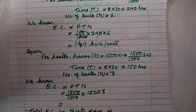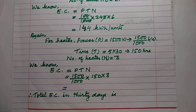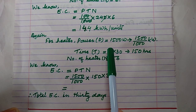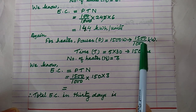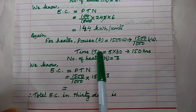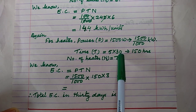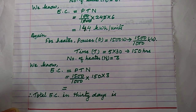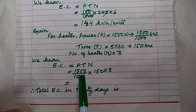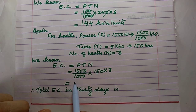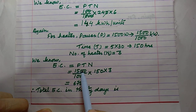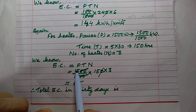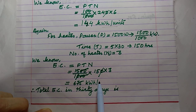For the heaters: power = 1500 watt = 1500/1000 kilowatt. Time = 5 hours daily × 30 days = 150 hours. Number of heaters = 3. Using the electrical consumption formula EC = P × T × N and putting the values — cancelling zeros and multiplying 15 × 15 × 3 — you get 675 kilowatt-hours or units.